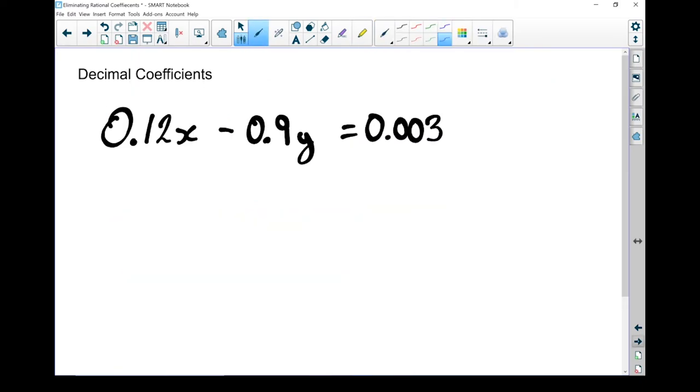Let's take a look at getting rid of the decimal coefficients. Now decimals and fractions are just different ways of writing the same thing. So I'm going to use the same method. I'm going to find something to multiply it by.